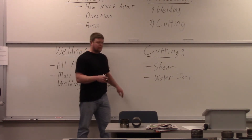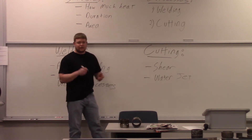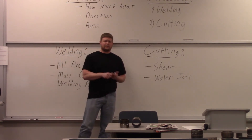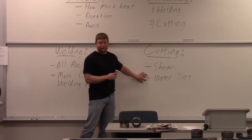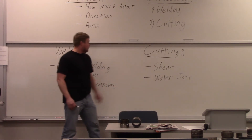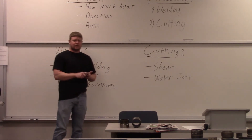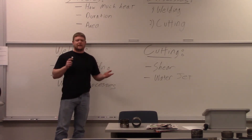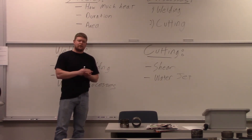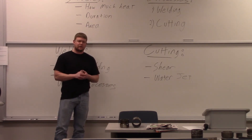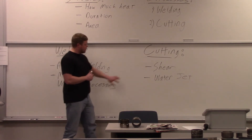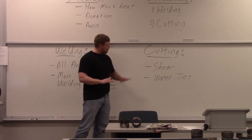Water jet is becoming more and more commonly used — it's a stream of water that cuts material, extremely efficient, and has no heat affected zone. Even with a bandsaw, mill, or lathe, there's heat produced when cutting, and a lot of people use cutting fluids to reduce that heat affected zone. But with a shear and water jet, you have absolutely no heat affected zone.